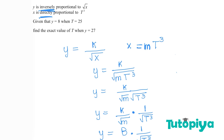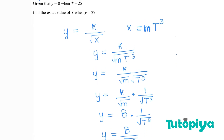From here, I'm going to substitute the values given in the question. It says y is 8 and t is 25, so: 8 equals b over the square root of 25 cubed. That's b over the square root of 15,625, which simplifies to b over 125. Therefore b equals 8 times 125, giving b equals 1000.